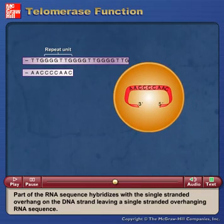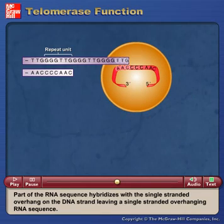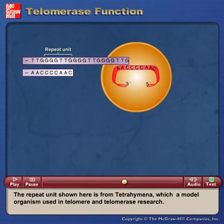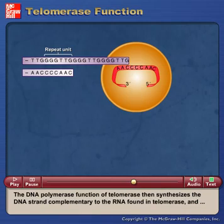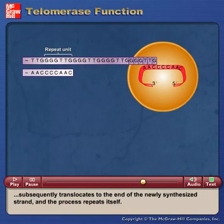Part of the RNA sequence hybridizes with the single-stranded overhang on the DNA strand, leaving a single-stranded overhanging RNA sequence. The repeat unit shown here is from Tetrahymena, which is a model organism used in telomere and telomerase research. The DNA polymerase function of telomerase then synthesizes the DNA strand complementary to the RNA found in telomerase, and subsequently translocates to the end of the newly synthesized strand, and the process repeats itself.